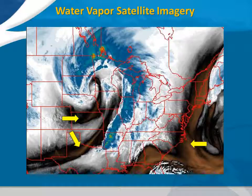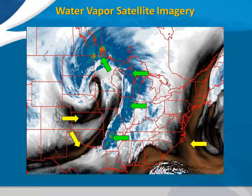In this image, the brighter blues and oranges, some of which are identified by green arrows here, indicate where water vapor content is highest.